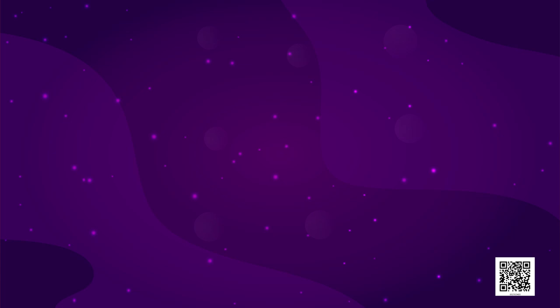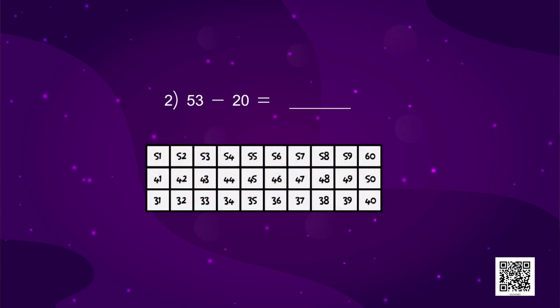Next is 53 minus 20. Now, to reduce 20 from 53, we will jump one step down from 53 to 43. And then, one more step down to 33. So, that means, we reduced 20 from 53 and got 33.